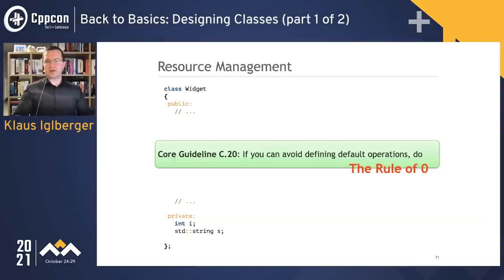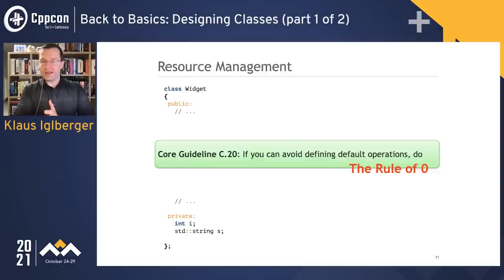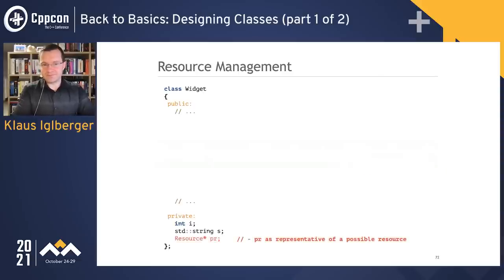If those two data members are all I have, you may know you don't need to manually implement these special member functions. The compiler will implement them for us — this is why they're called special member functions. This is the Rule of Zero, or Core Guideline C.20: if you can avoid defining default operations, do. If I don't write code, that code is kind of easy to change. So in that case, keep your class super simple.